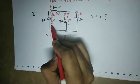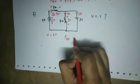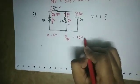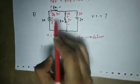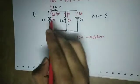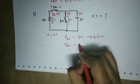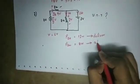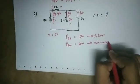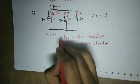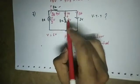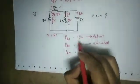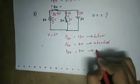The current source has the current entering the negative terminal, so this is delivered power. Power corresponds to V into I equals 6 into 2, which is 12 watts delivered. The resistor always absorbs power: for the 2 ohm resistor, V into I equals 8 watts absorbed. Next 2 ohm resistor: V into I equals 2 into 1, which is 2 watts absorbed.